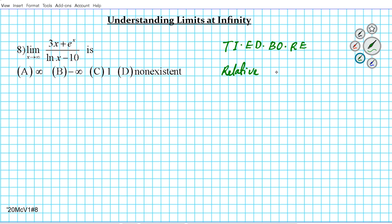With relative rates as x approaches infinity, we have to be careful because the left and right-end behavior of exponential and logarithmic functions are different. As x approaches infinity, a logarithmic function — the ln function — is the slowest, followed by power functions, and then the fastest are your exponential functions.